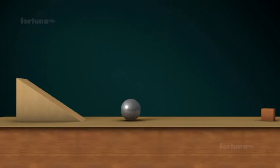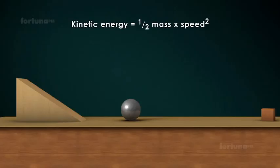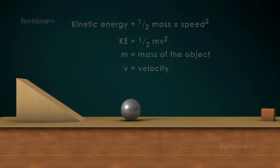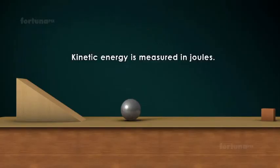If we apply an equation to what we have seen, we would say that kinetic energy is equal to half the mass multiplied by the square of the speed. This can also be written as kinetic energy equals half mv squared, where m is the mass of the object and v is the velocity. Kinetic energy is measured in joules.